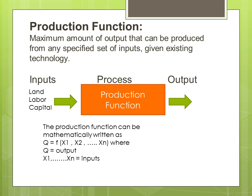By using inputs like land, labor, and capital, we can achieve our output. This is the process of the production function — after using inputs we achieve output. Mathematically, the production function is written as Q = f(X₁, X₂, ... Xₙ), where Q is output and X₁, X₂, ... Xₙ are all inputs.